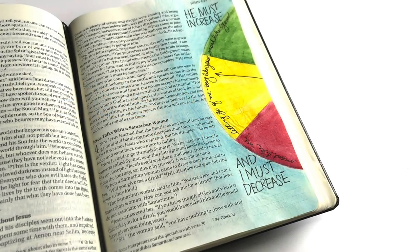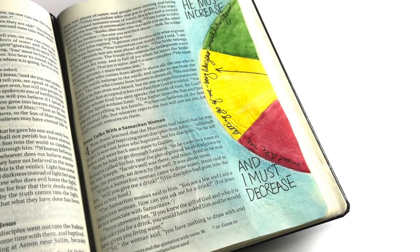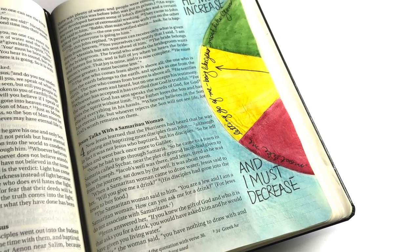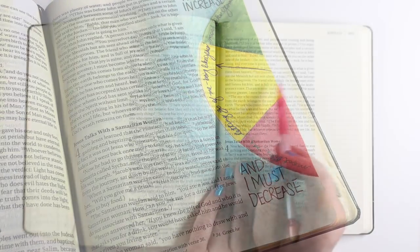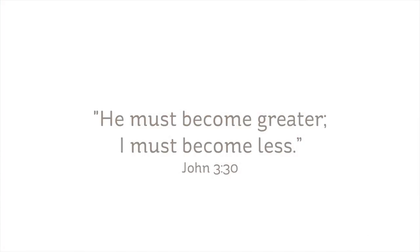Hi there, I'm Sandi Alnach with another Lenten Bible journaling video, He Must Increase and I Must Decrease. The scripture verse is from John chapter 3, verse 30. He must become greater, I must become less.